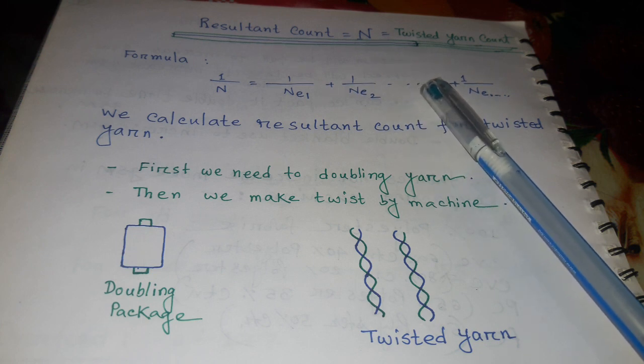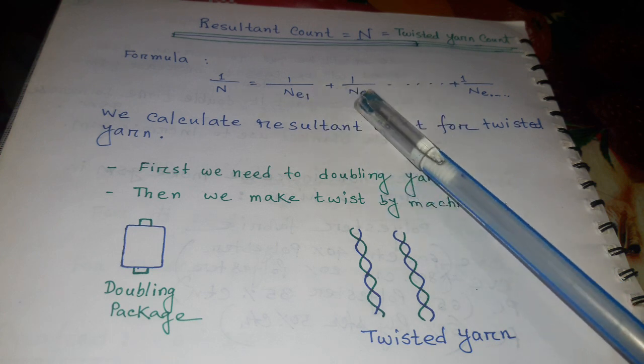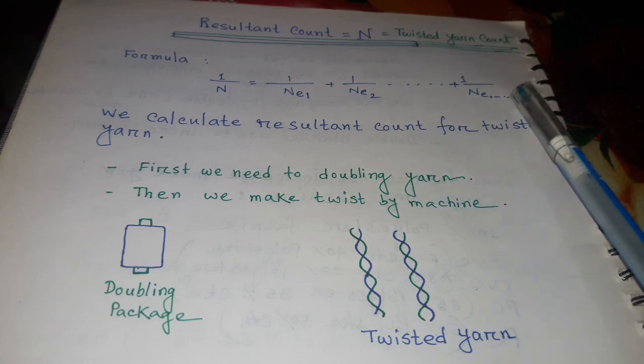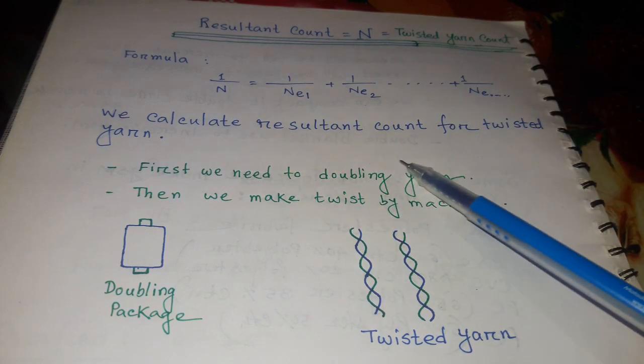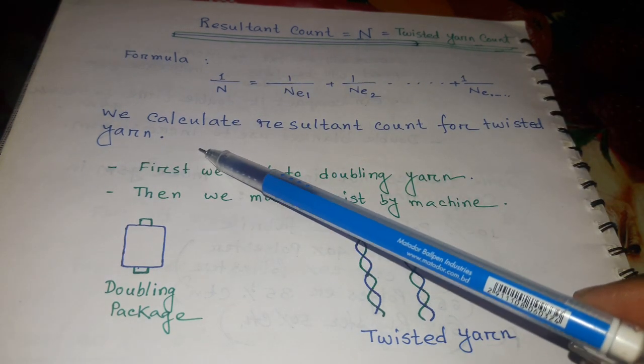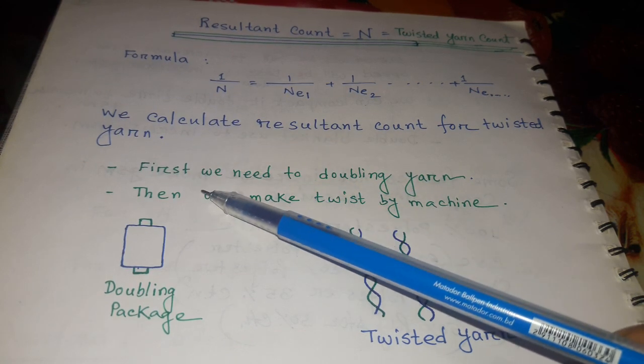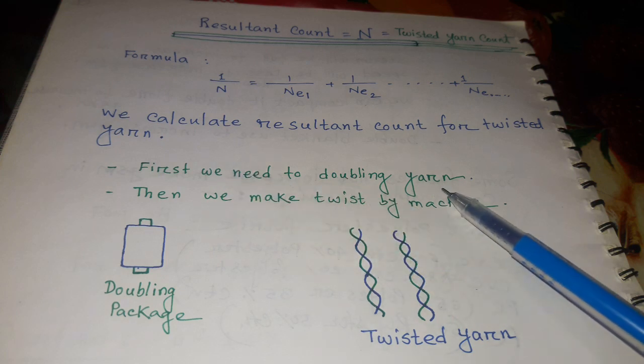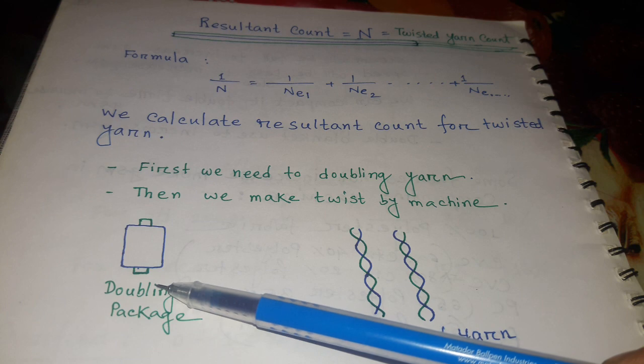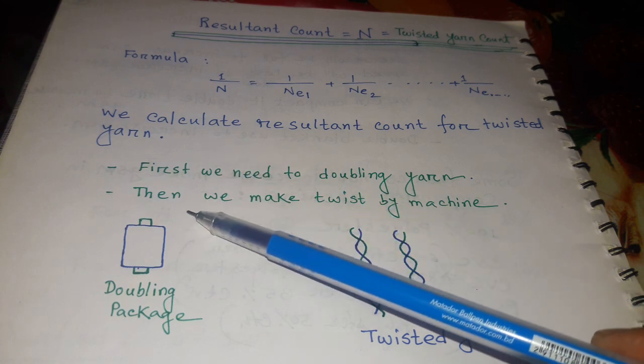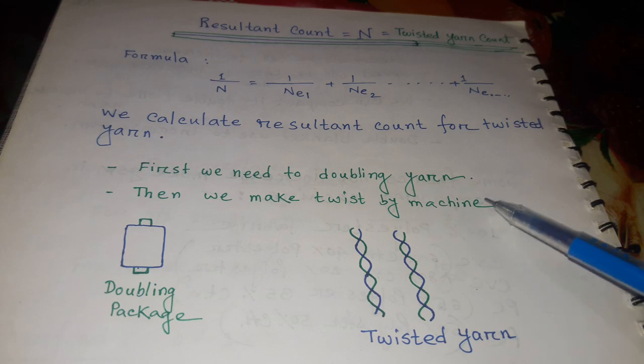The number of yarns can be more, and the equation extends accordingly. Now we calculate resultant count for twisted yarn. First, we need to double the yarn—that's the doubling package I have drawn. On the right side, I've drawn twisted yarn. Then we make twist by twisting machine.